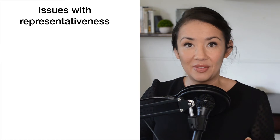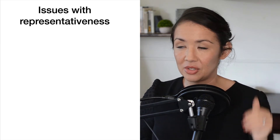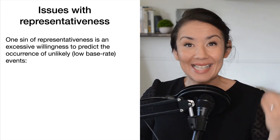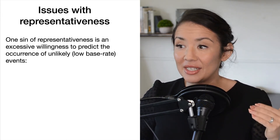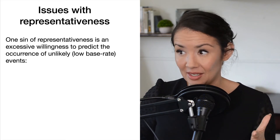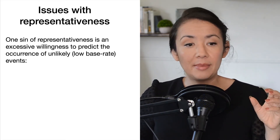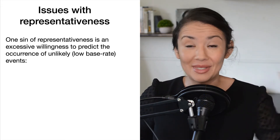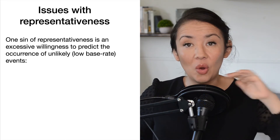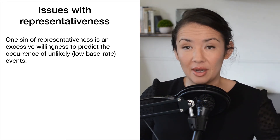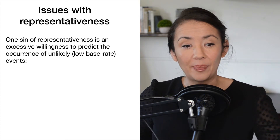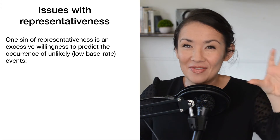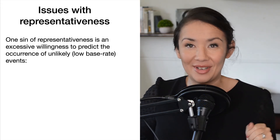The issue with representativeness is that one of its sins is an excessive willingness to predict the occurrence of an unlikely event, which is called a low base rate. By base rate I mean the overall times that something happens. Things that have a low base rate occur very few times, and we're likely to focus on those low-occurring events when they fit the representativeness of the situation.